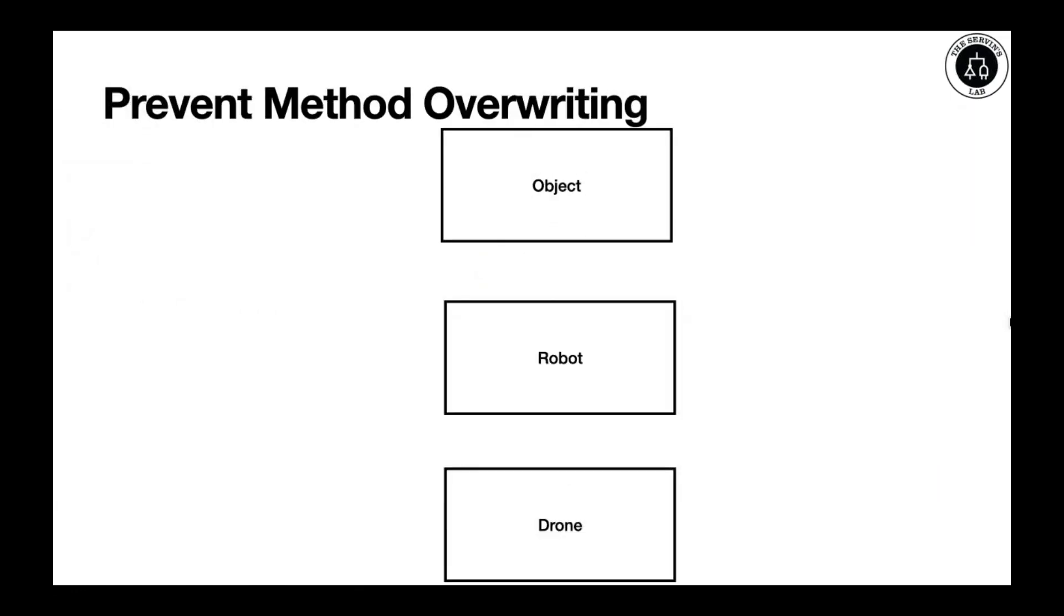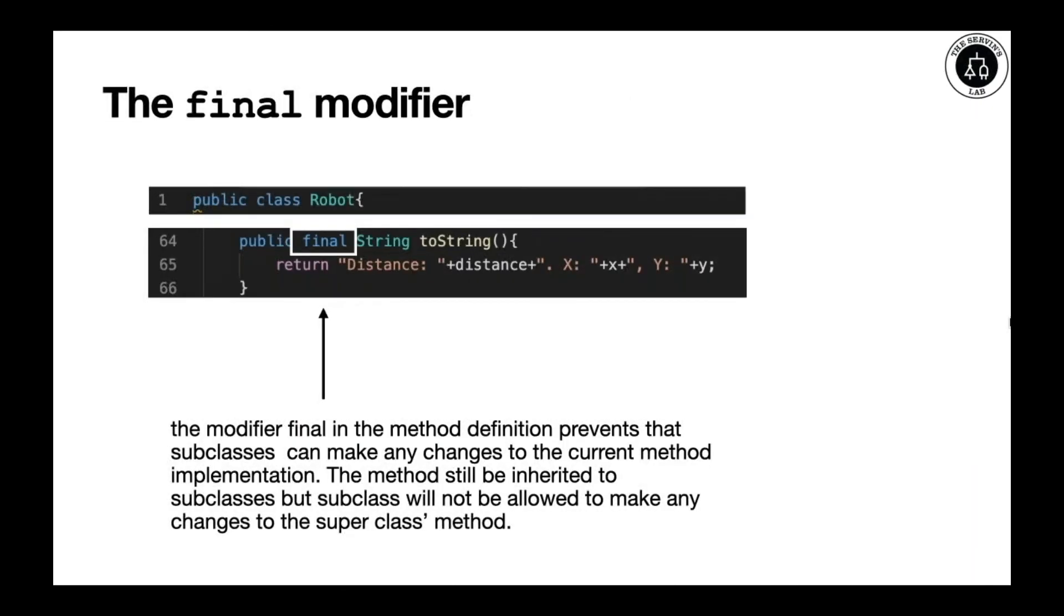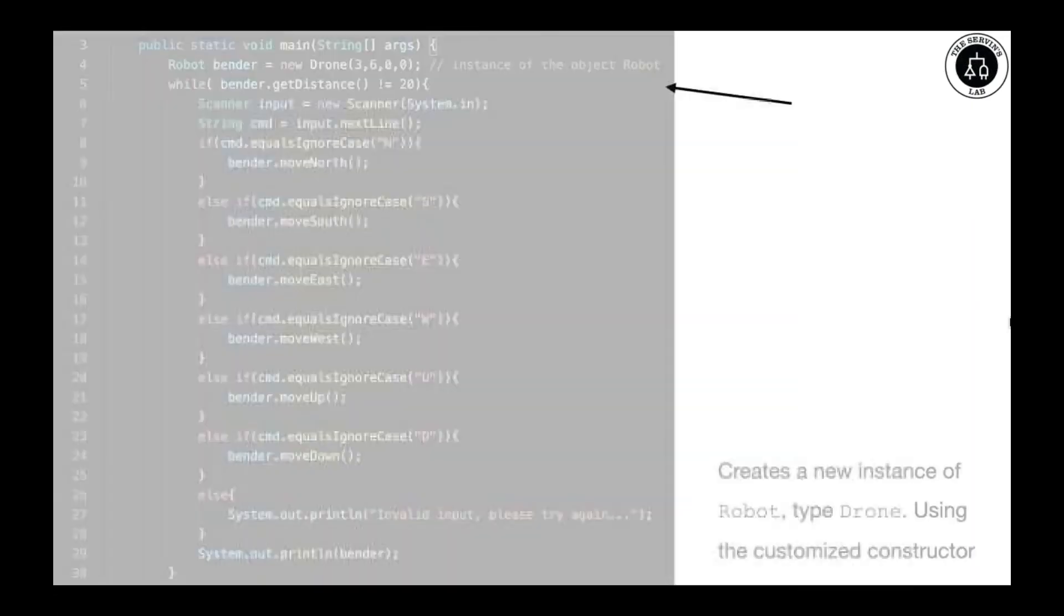How about we want to prevent this process? There's a process to prevent this flow of inheritance, and this is by using the keyword final. The keyword final will prevent that future extensions of this instance will take advantage of overriding. It is simple. In the class robot, we need to include the keyword final just after the encapsulation public and just before the return type, in this case string. This will prevent that elements like, for example, drone will extend the inheritance.